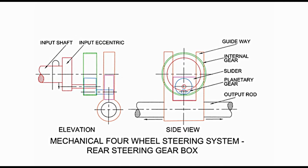The guideway is mounted on the output rod. The slider, as it moves upwards, pushes the guideway in the horizontal direction also. This causes horizontal movement of the output rod as shown by arrowheads in the side view. Let us consider clockwise rotation of the input rod. Initially, the planetary gear is in the lowermost position. The output rod is also in the middle position. As the planetary gear rotates clockwise, the slider moves upwards and leftwards, taking the output rod towards the left. The output rod continues to move left until the planetary gear rotates through 90 degrees, after which the planetary gear attains the uppermost position in the internal gear, and the output rod moves back to the middle position.